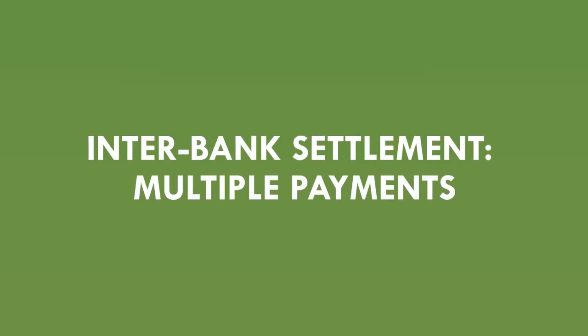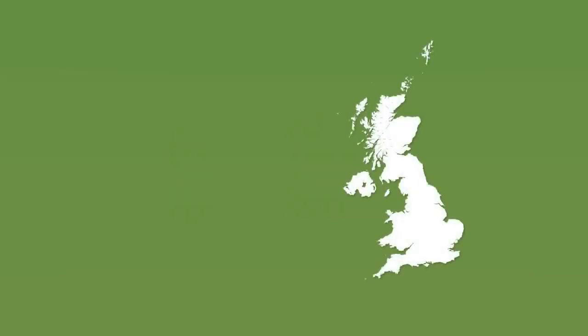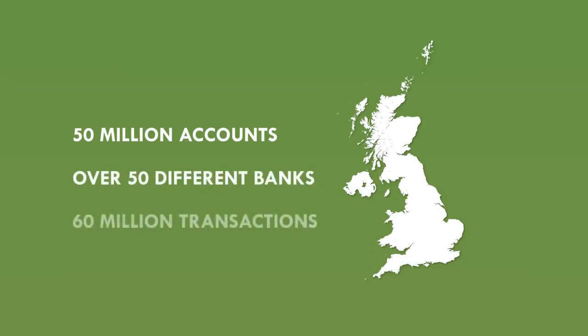This was a simple example involving just one payment between two bank customers and two banks. But in the UK right now, there are around 50 million people with bank accounts, some making more than one electronic payment a day, banking with over 50 different banks. Every day, over 60 million transactions are made between bank accounts in the UK through payment systems including Visa, MasterCard, direct debit, and online bank transfers. If banks had to go through the full settlement process every time someone bought a sandwich with a debit card, it would get very messy very quickly. But there's a clever way of simplifying the whole thing massively — it's called multilateral net settlement.